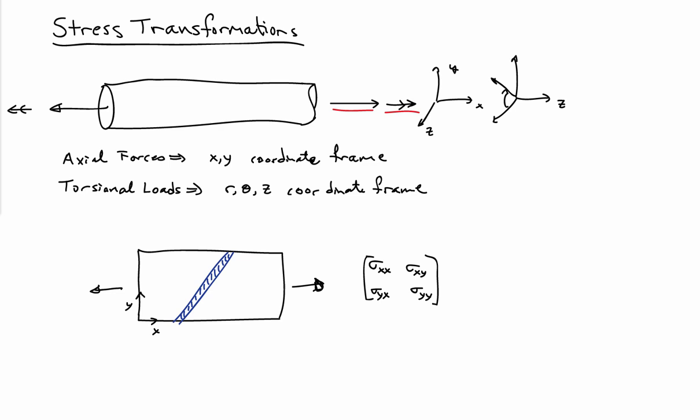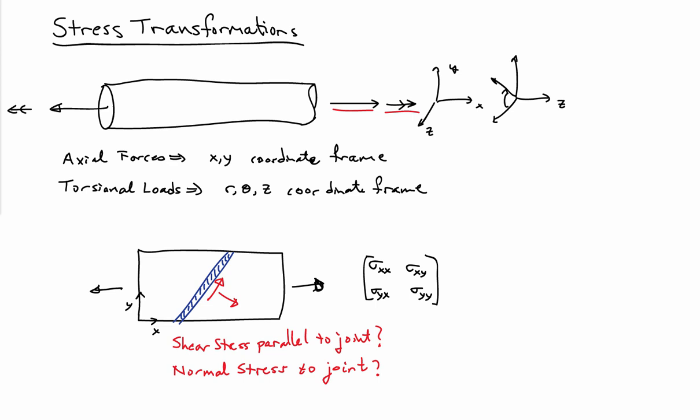The other case where stress transformations come up is suppose I have a plate and it has a welded joint at some angle going through it. I've somehow measured the stresses in the XY coordinate frame — so I know the normal stresses in both the X and Y directions and the shear stresses in the XY plane — but I'm really interested in the performance of the weld. The questions that would be asked are: what are the shear stresses in the weld, meaning stresses parallel to the joint, or what are the normal stresses acting on the joint? One way of thinking about this is that there's another coordinate system aligned with the weld.